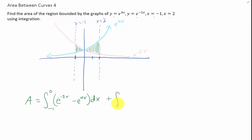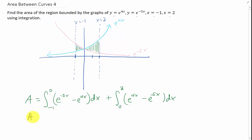We'll then add on the area of the second region whose x values go from 0 to 2. In this region, the upper function is e to the 4x and the lower function is e to the negative 5x. That's the integral. That's the setup. We just need to evaluate it.